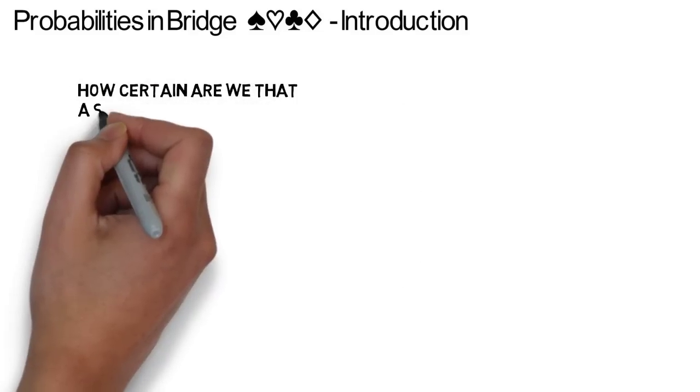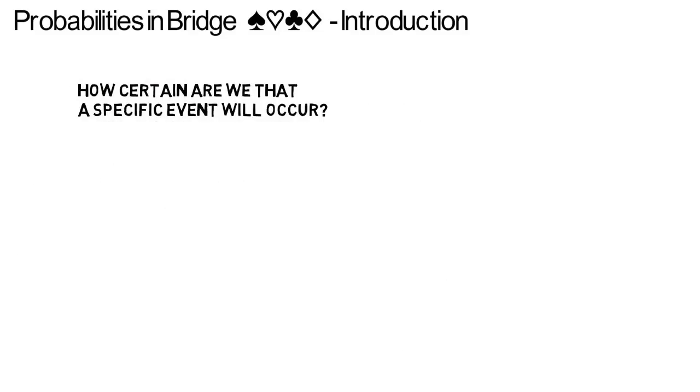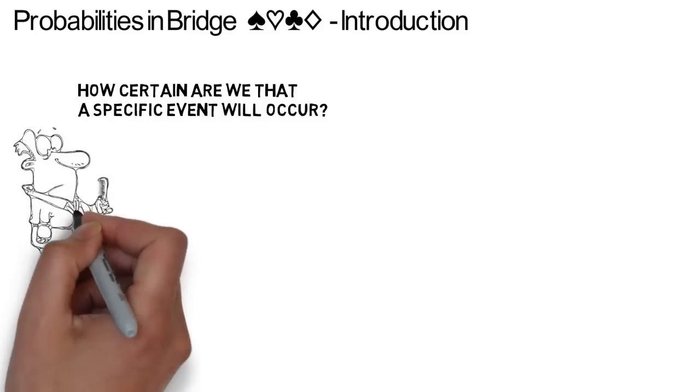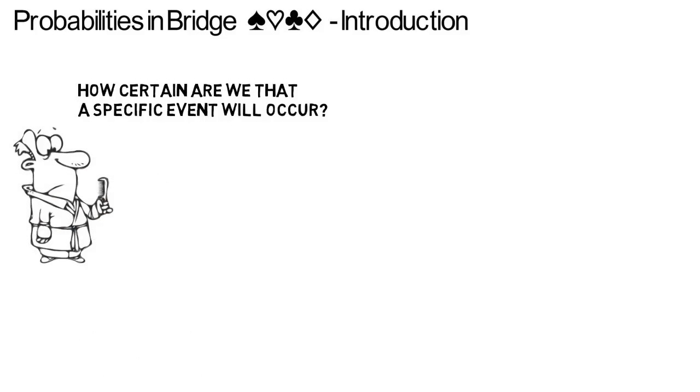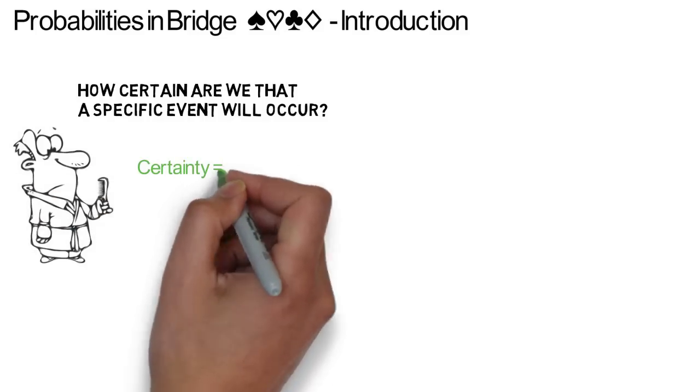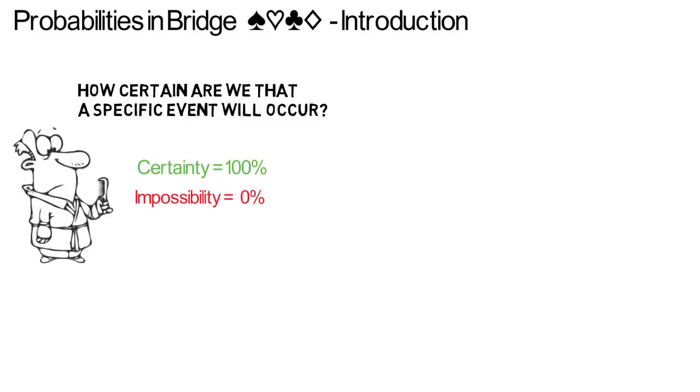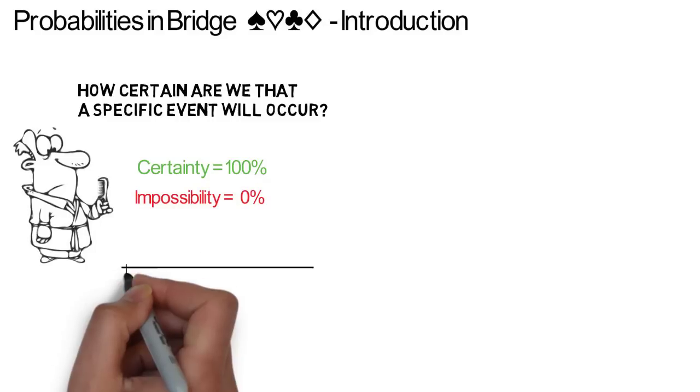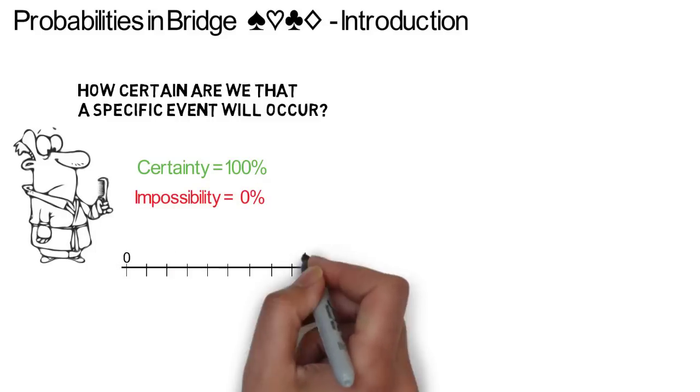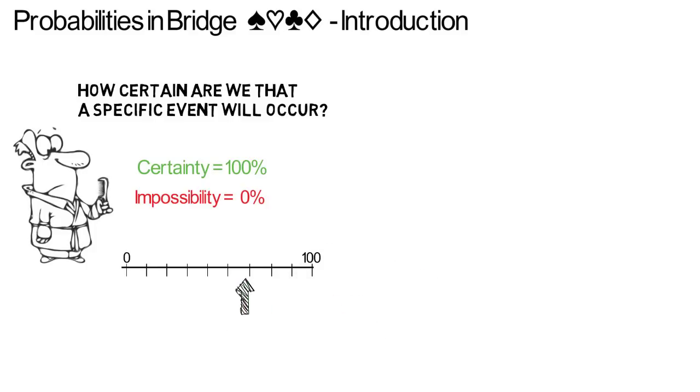How certain are we that a specific event will occur? If we use the value 100% to indicate certainty and 0% to indicate impossibility, then the likeliness that any specific event will occur may be represented by a value within this range. We call this value probability.